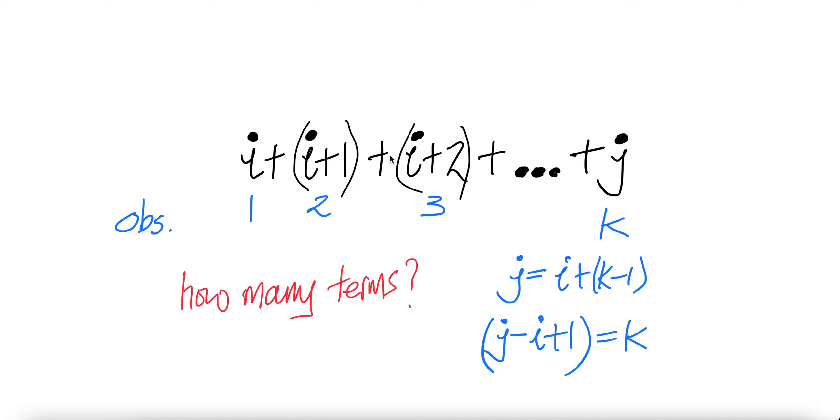Actually, I plus K minus one. Now K is given by isolating K, and then this goes to the left. It'll be J minus I plus one. So this is the J minus I plus one term.